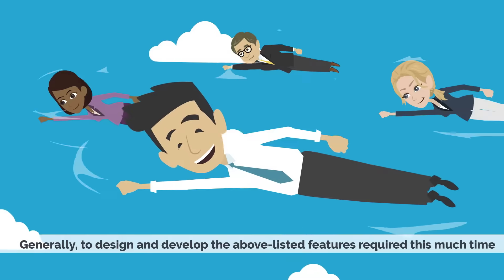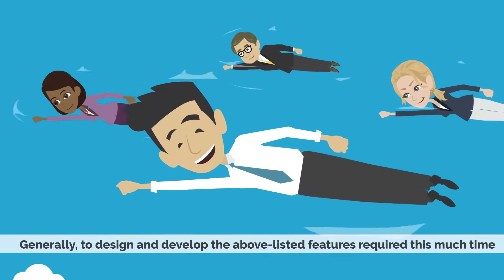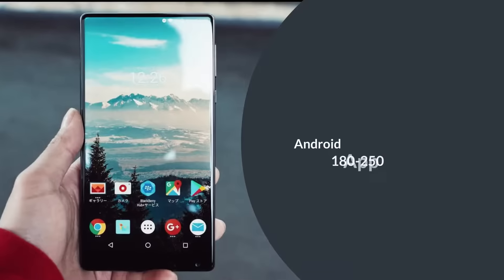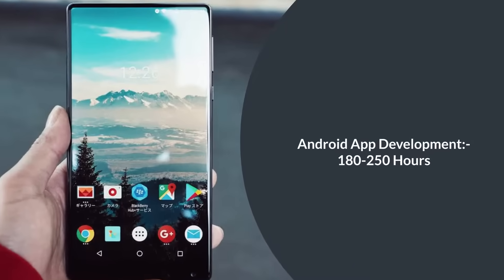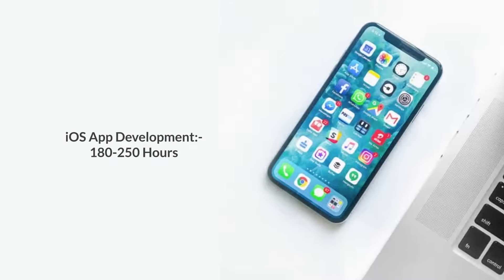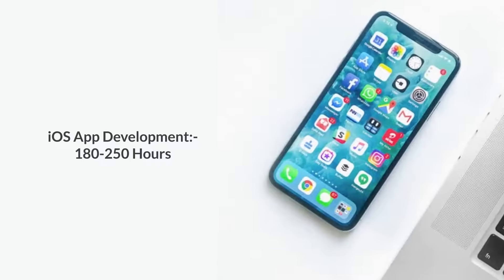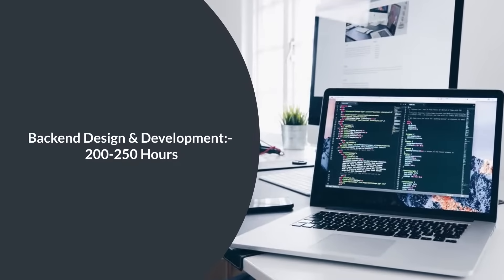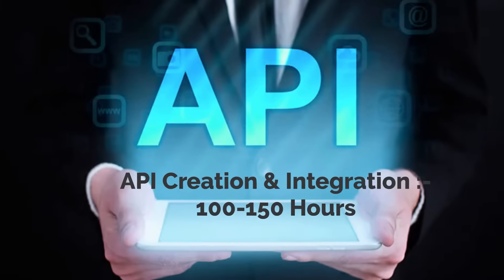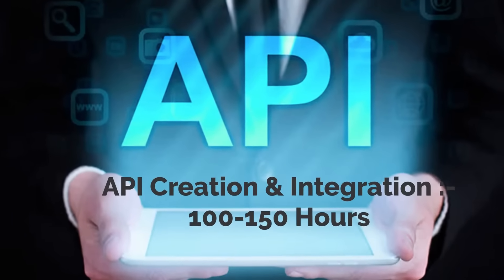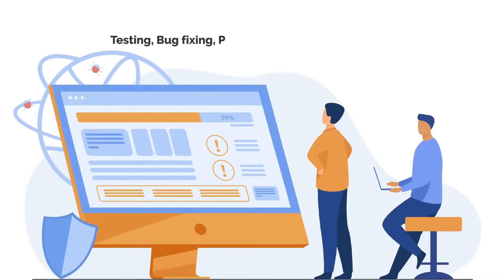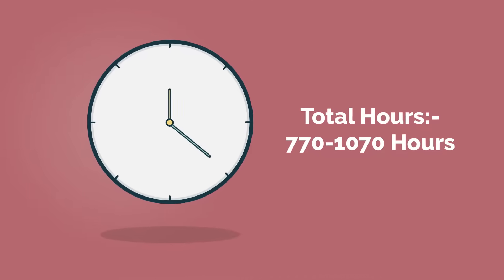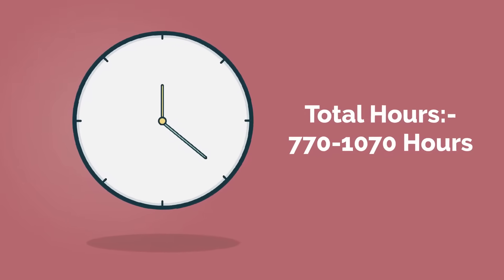Generally, to design and develop the above listed features requires this much time: App designing — 80 to 120 hours; Android app development — 180 to 250 hours; iOS app development — 180 to 250 hours; Backend design and development — 200 to 250 hours; API creation and integration — 100 to 150 hours; Testing, bug fixing, project management and deployment — 30 to 50 hours. Total hours: 770 to 1,070 hours.